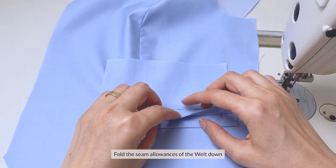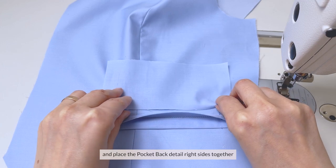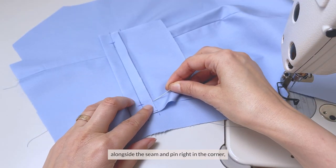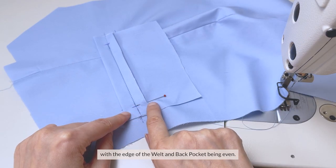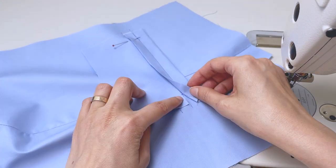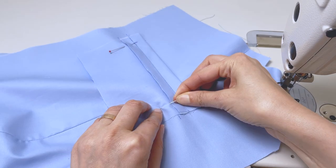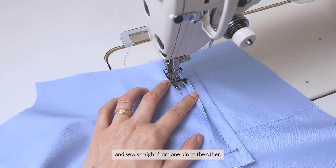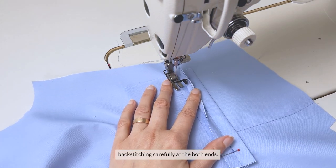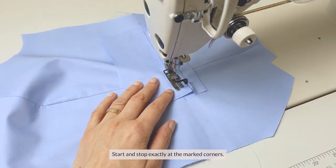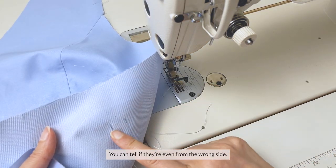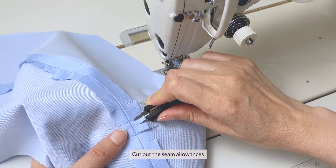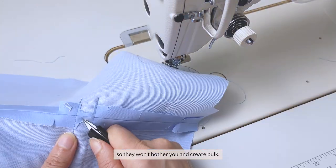Fold the seam allowances of the welt down and place the pocket back detail right sides together alongside the seam and pin right in the corner, with the edge of the welt and the back pocket being even. Now you can draw a straight guiding line and sew straight from one pin to the other, backstitching carefully at both ends. Start and stop exactly at the marked corners and you can tell if they're even from the wrong side. Cut out the seam allowances so they're not going to bother you and create bulk.